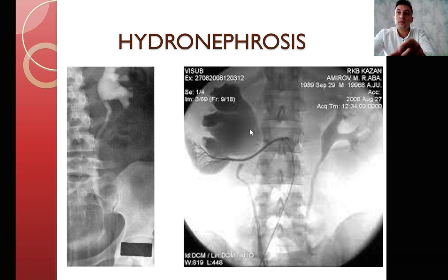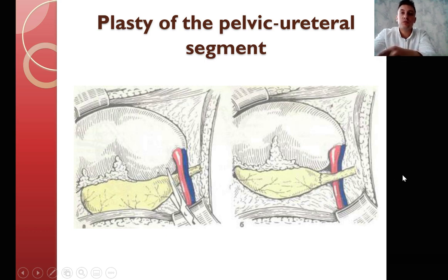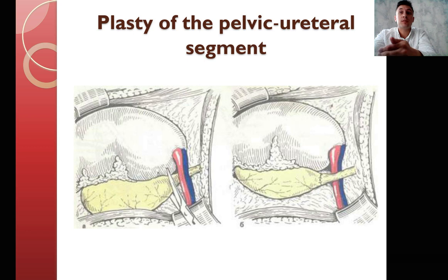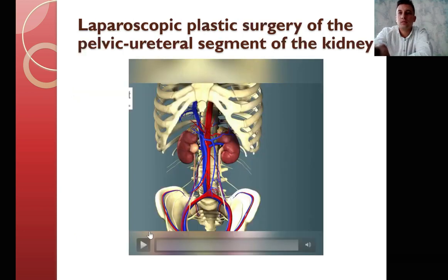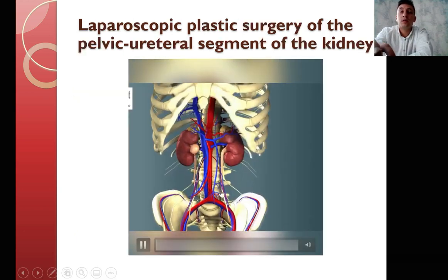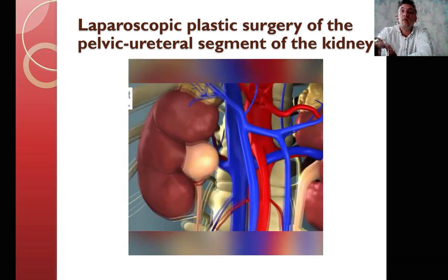This is the surgical treatment of this pathology. We perform plasty of the pelvic-ureteral segment — a surgical procedure which includes plastic surgery of the pelvic-ureteric segment. The stages include excision of the stenotic zone, repositioning of the artery behind the kidney, and formation of the anastomosis. The most frequently performed technique is the Heinz-Anders pelvic-ureteric segment plasty.